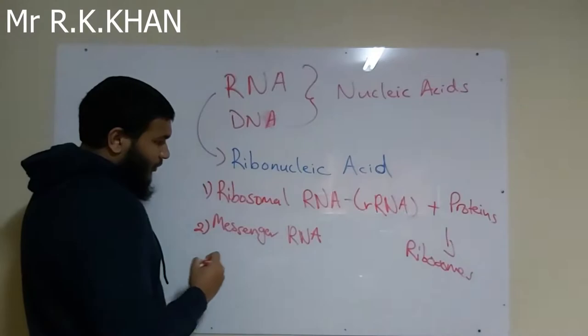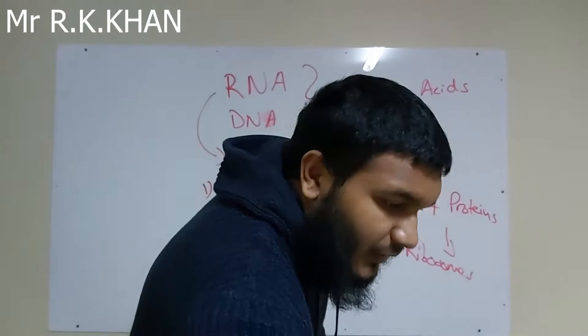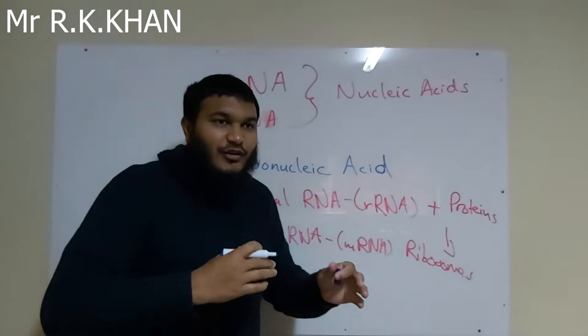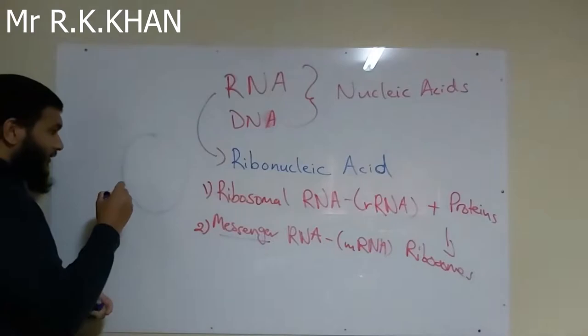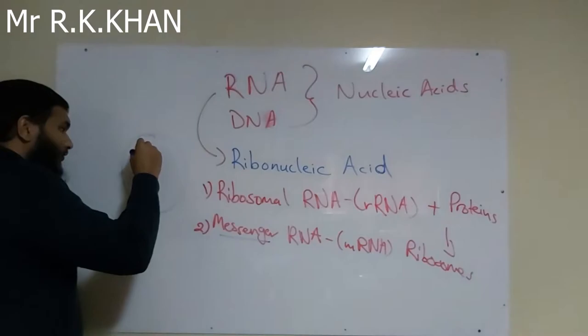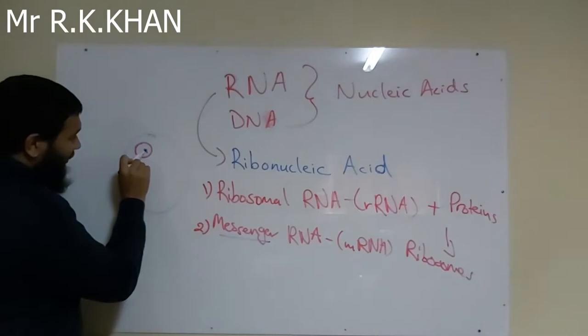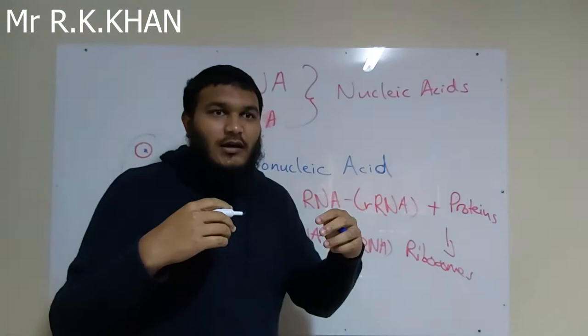The second type is messenger RNA, or mRNA. From its name — messenger — we know that it sends or relays messages. The message is obtained from the nucleus. If we picture a cell, the mRNA will go into the nucleus to receive the message.